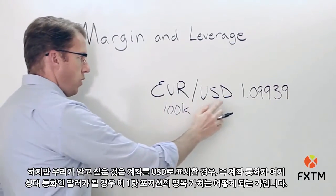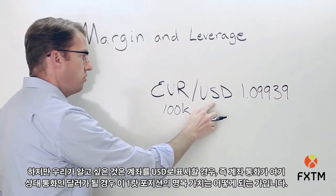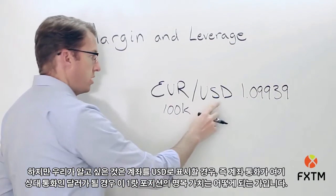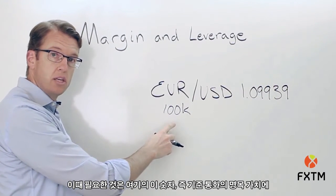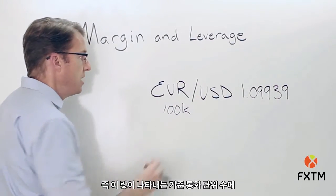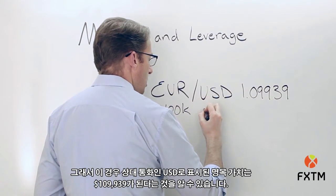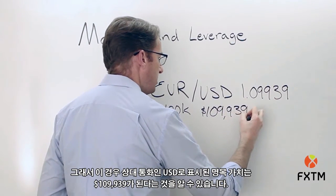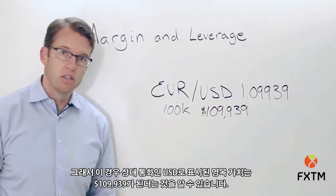What we need to know, if your account is denominated in US dollars, is the notional value of this one lot position where the account currency is the quote currency — the dollar. All we have to do is take the notional value in the base currency — how many units of the base currency this lot represents — and multiply that by the exchange rate. In this case, this represents $109,939 of notional value in the US dollar.